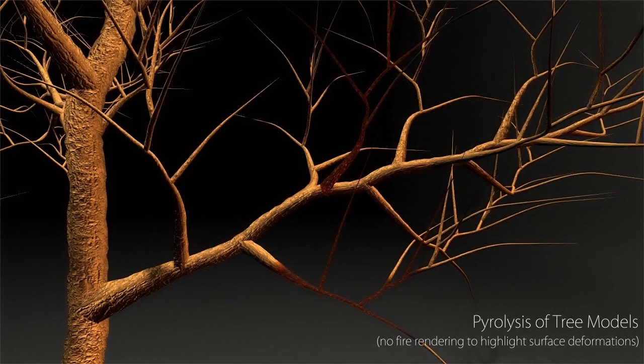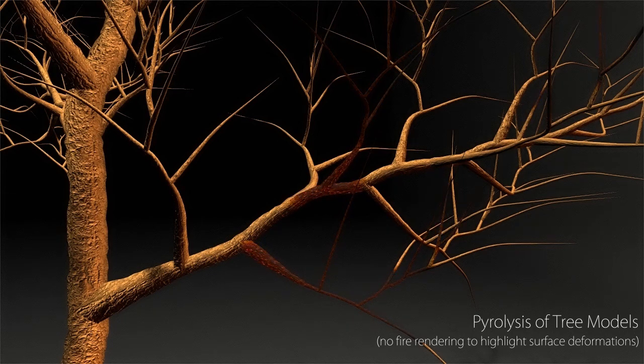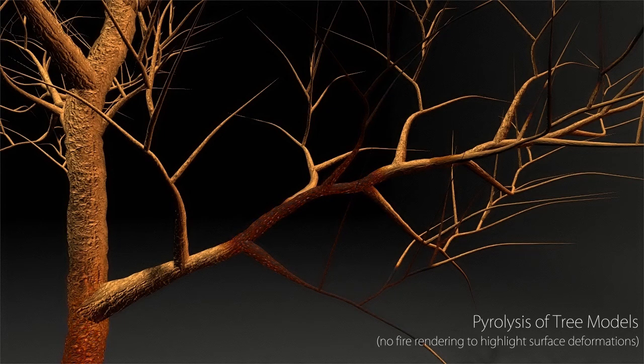Our framework allows computing the realistic combustion process of tree models. For charring materials such as paper, cloth, and wood, this process is called pyrolysis. By efficiently computing the pyrolysis process in the surface domain of the tree model,